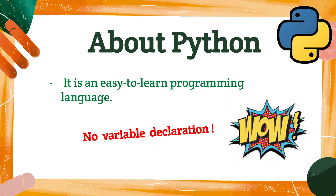Python became popular because it is an easy to learn programming language. For me, I learned Java first. I am so surprised that Python has simplified a lot of steps that I need to do in Java, like variable declaration. That means you do not need to declare what type of variable before you use it. Isn't this so convenient?